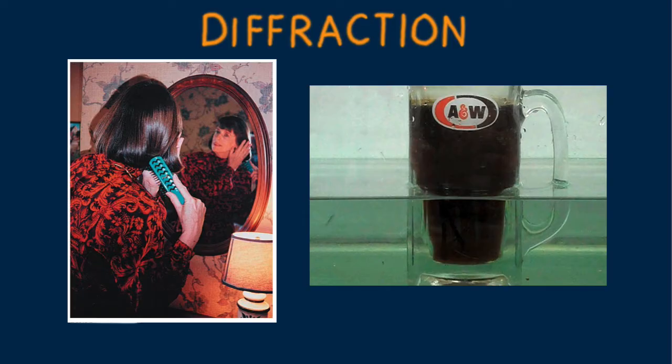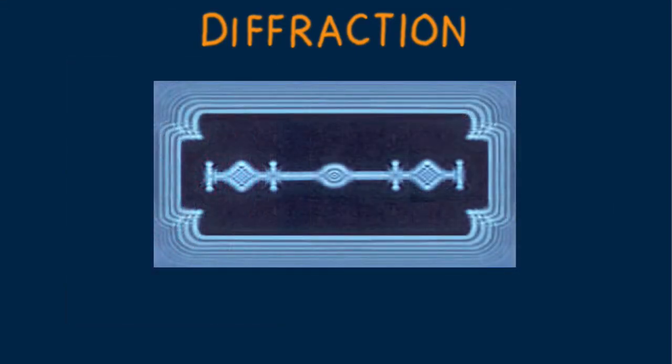Any bending of light by means other than reflection and refraction is called diffraction. Diffraction is the bending of light as it passes the edge of an object creating a fuzzy edge. It also occurs when a wave passes through an aperture.